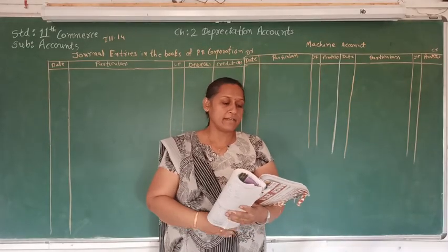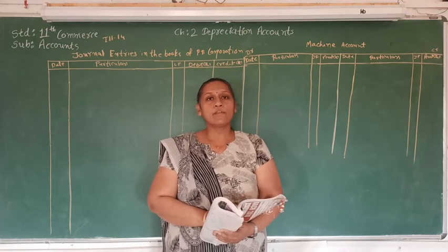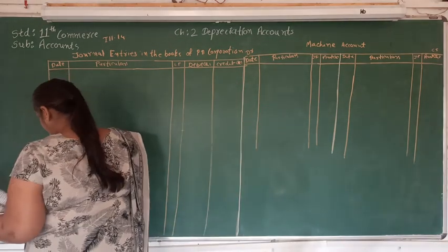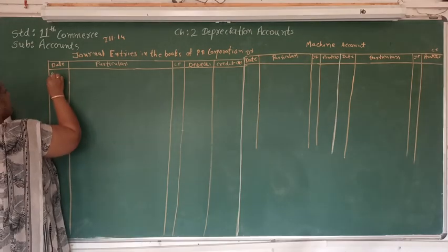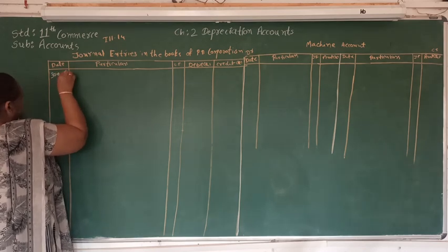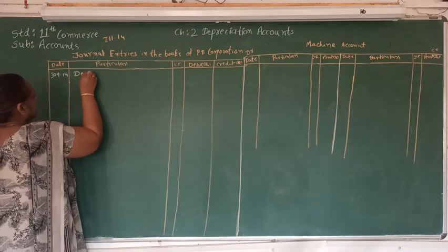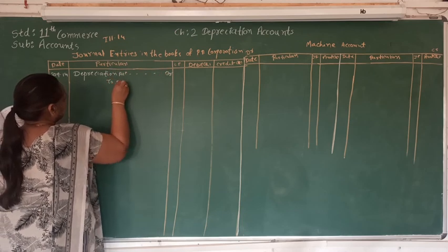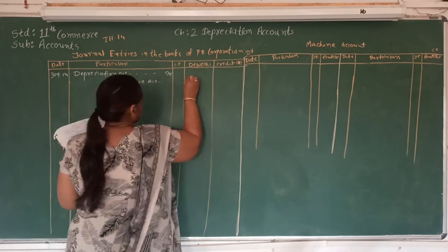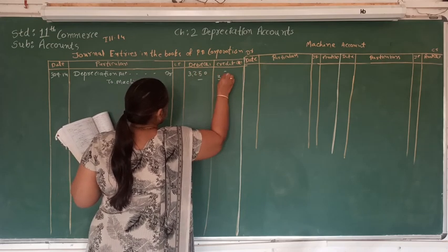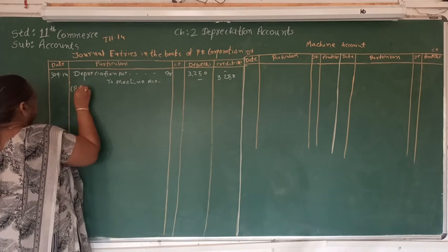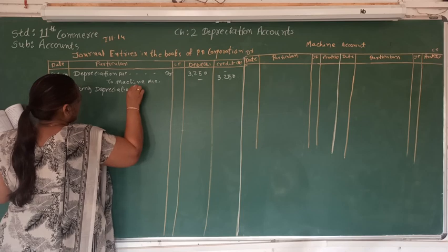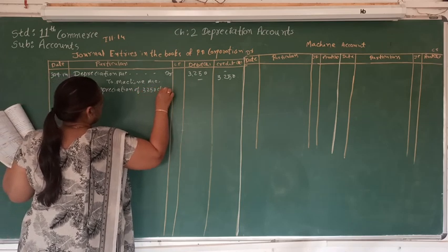Now let's prepare the journal entry. The first journal entry we are going to pass will be for charging depreciation. The journal entry is: Depreciation Account debit to Machine Account. We are going to pass this on the day of sale of the machine, which is 30th September 2014. The depreciation amount already calculated is Rs. 3,250 — being depreciation charged on the machine.